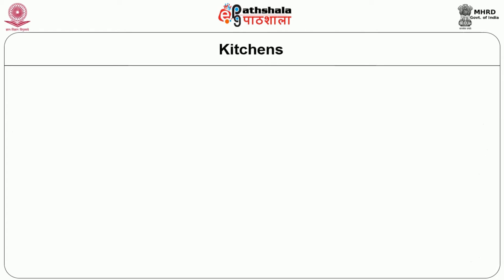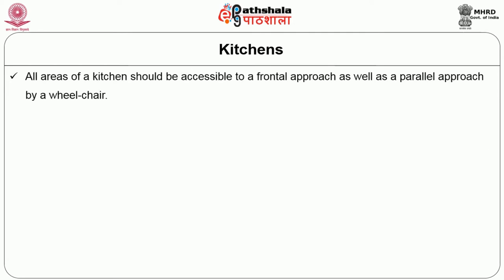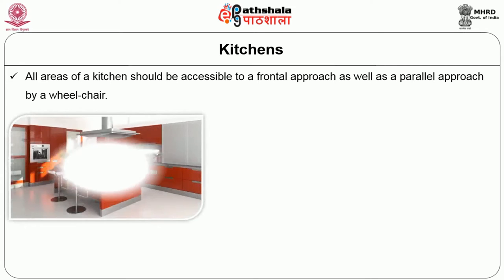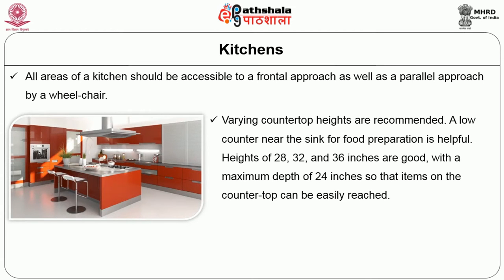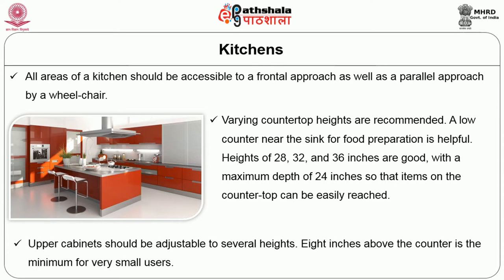Kitchen requirements: All areas of a kitchen should be accessible via a frontal approach as well as a parallel approach by a wheelchair. Varying countertop heights are recommended. A low counter near the sink for food preparation is helpful. Heights of 28, 32, and 36 inches are good with a maximum depth of 24 inches so that items on the countertop can be easily reached. Upper cabinets should be adjustable to several heights; 8 inches above the counter is the minimum for a very small user.